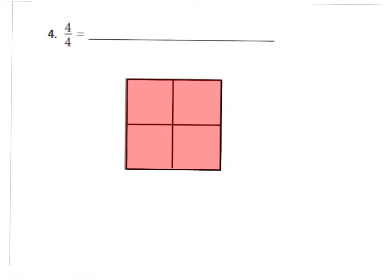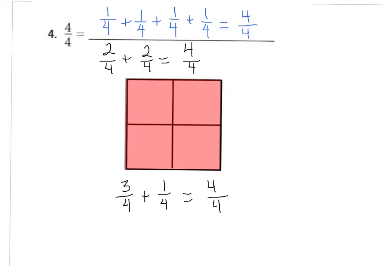Here's number four — we're going to look at four-fourths. Write down a few possibilities to write four-fourths as a sum of fractions, just like we did on the last problems. Pause the video and press play when you're ready to check. Here are possibilities: one-fourth plus one-fourth plus one-fourth plus one-fourth equals four-fourths. Two-fourths plus two-fourths equals four-fourths. Three-fourths plus one-fourth equals four-fourths.